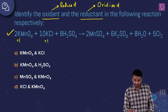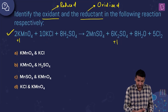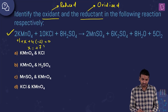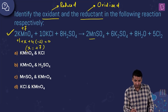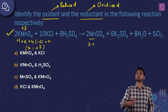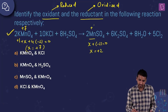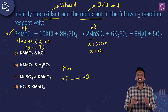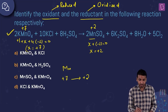Looking at potassium: it is +1 on both sides, so no change. For manganese in KMnO₄: x + 4(−2) = 0, so Mn is +7. In MnSO₄: x + (−2) = 0, so Mn is +2. Manganese goes from +7 to +2 — a decrease — meaning manganese is getting reduced. Therefore KMnO₄ is the oxidant.